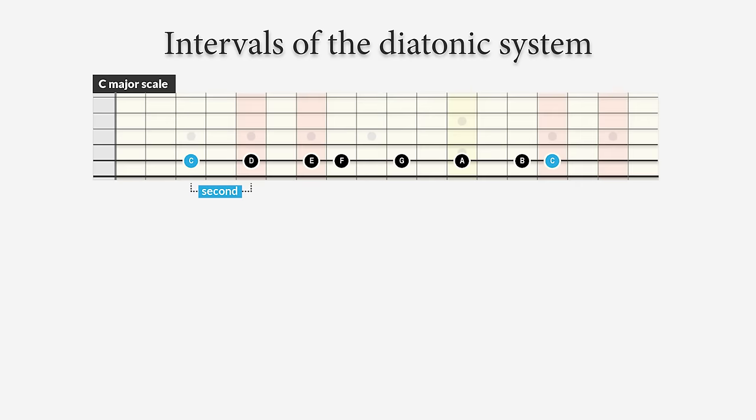The first interval is between the tonic C and the second note D — we call this a second. The next is between C and the third note E — a third. Then C and the fourth note F — a fourth. The notes become further apart, and the interval gets wider. The next interval is between C and the fifth note G — a fifth, which we all know as a power chord.